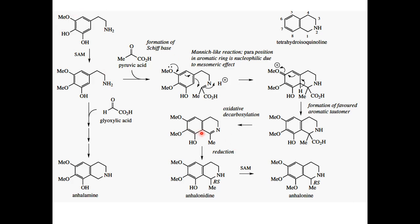Because in this step we have a Schiff base, which is attacked by an electron-rich carbon to produce a simple isoquinoline alkaloid.